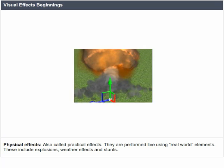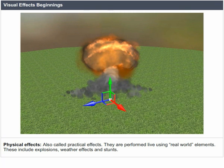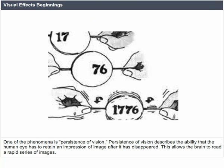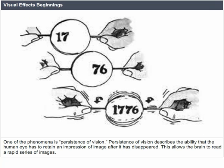In the beginnings of visual effects, physical effects — also called practical effects — are performed live using real-world elements. These include explosions, weather effects, and stunts. One important phenomenon is persistence of vision, which describes the ability of the human eye to retain an impression of an image after it has disappeared. This allows the brain to read a rapid series of images.